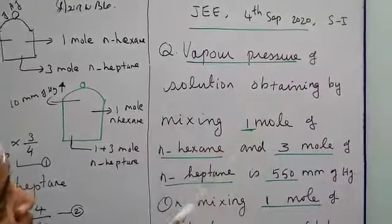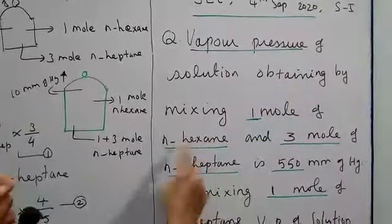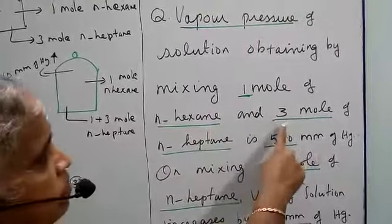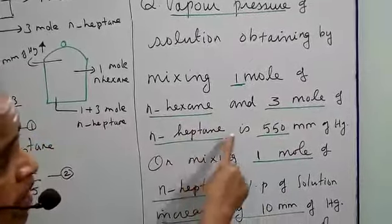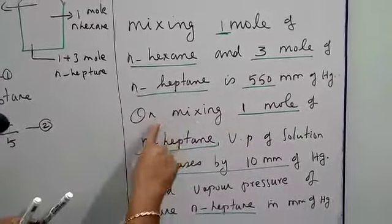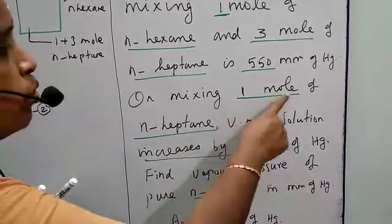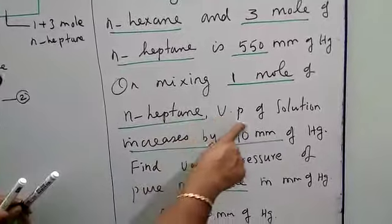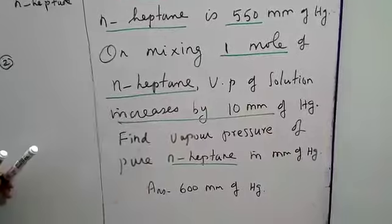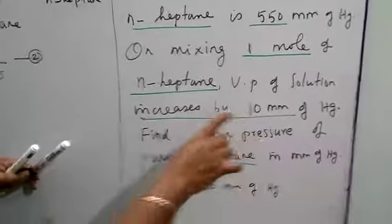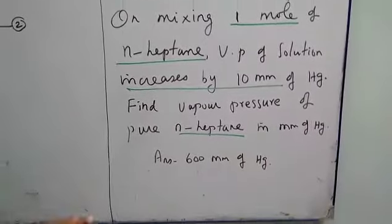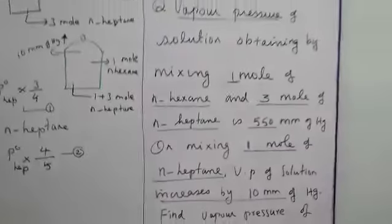The question is: vapor pressure of the solution obtained by mixing 1 mole of n-hexane and 3 moles of n-heptane is 550 mm of mercury. Further, on mixing 1 mole of n-heptane, the vapor pressure of the solution increases by 10 mm of mercury. Find the vapor pressure of pure n-heptane in mm of mercury.